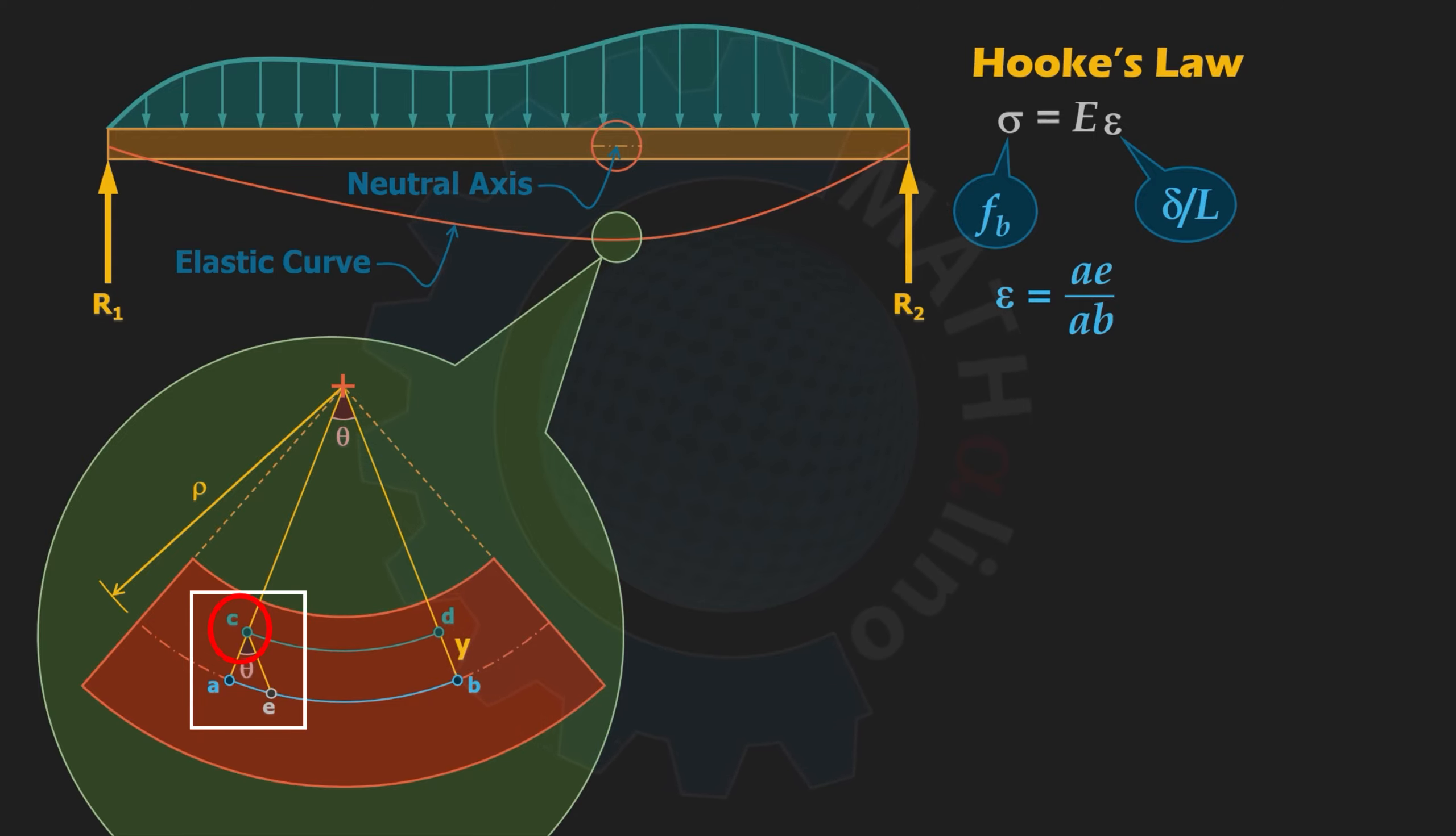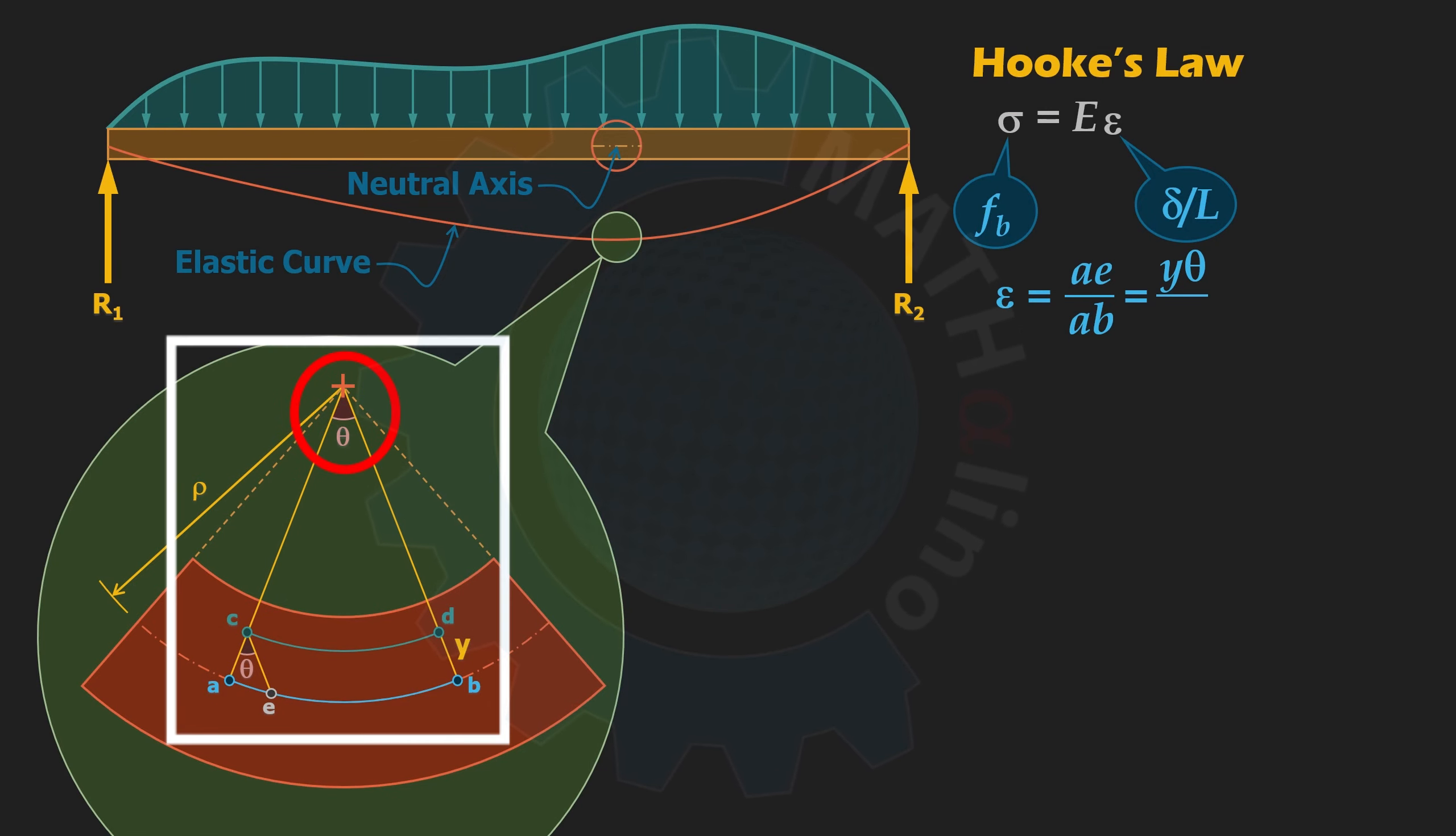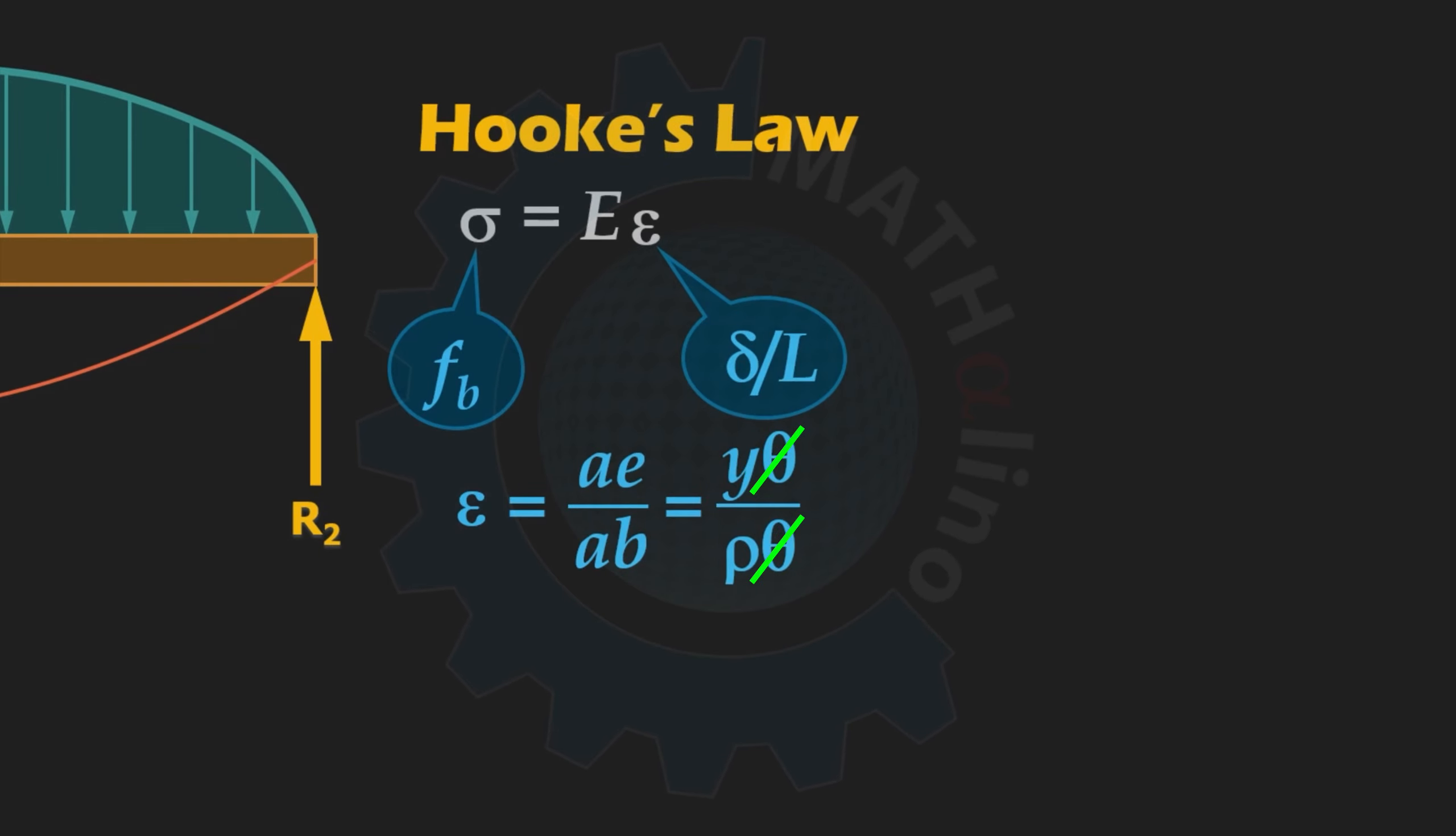Ae can be assumed to be a circular arc of radius y with center at point c. Therefore, ae is equal to y times theta, and ab of course is equal to rho times theta. Cancel out theta, and we have strain equal to y over rho. Hence, fb is equal to E times y over rho.